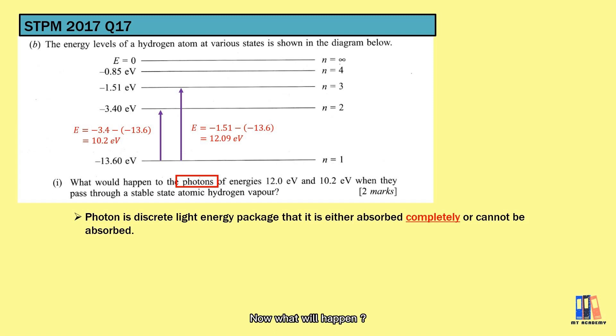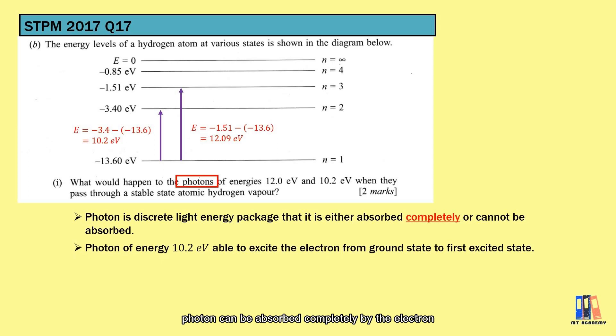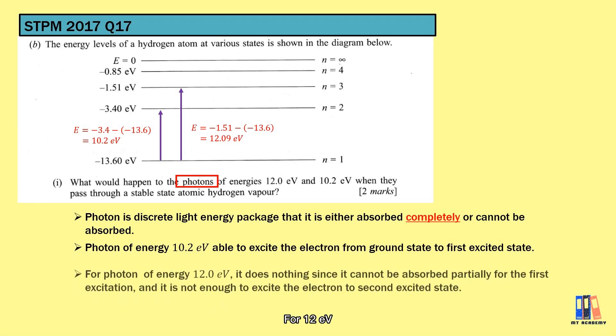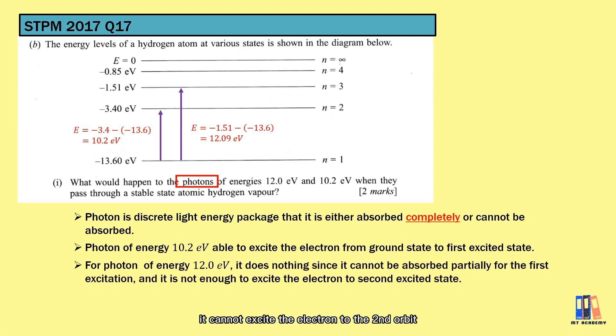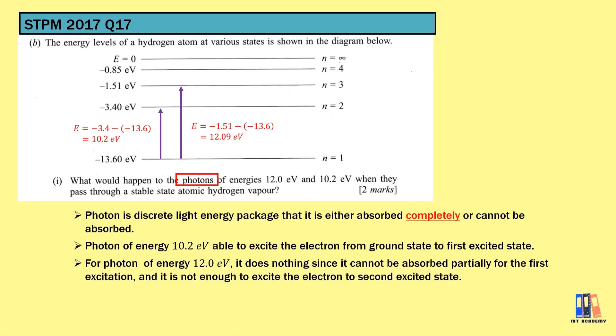Now, what will happen? First, the 10.2 eV photon can be absorbed completely by the electron to transit to the second orbit. The energy is just enough, not more or less than the required amount. For 12 eV, it cannot excite the electron to the second orbit because it cannot be absorbed partially and also the electron could not store the remaining 1.8 eV energy. The 12 eV energy is also not enough to excite to the third orbit, so nothing will happen to the photon in this case.